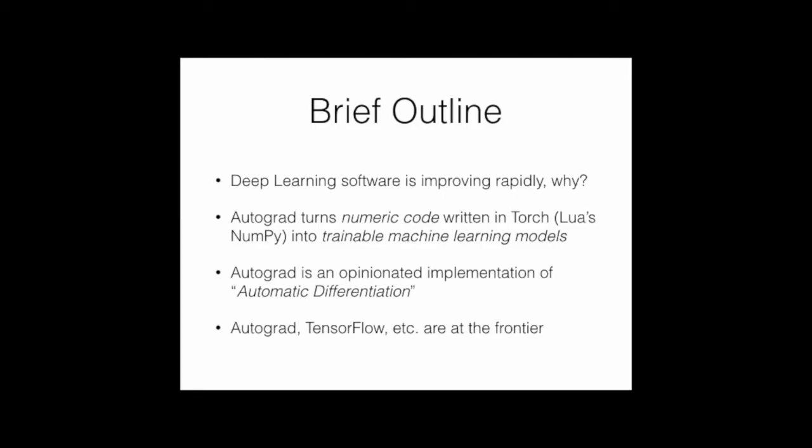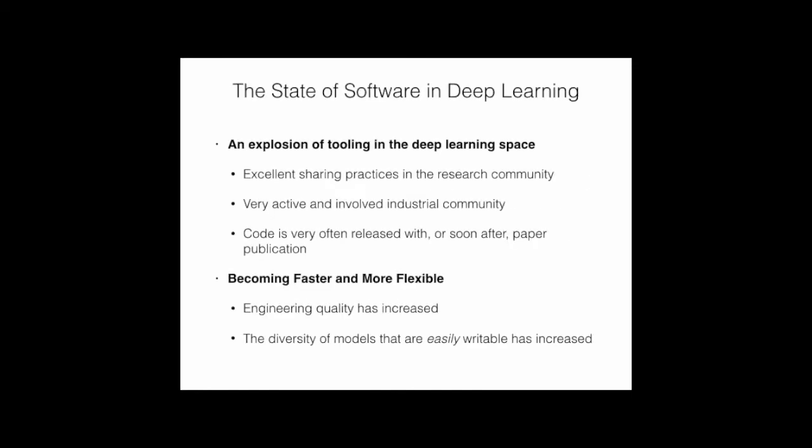I want to tell you about Autograd, a project that turns numeric code—just regular code that looks like NumPy—into trainable machine learning models. This uses something called automatic differentiation, a very opinionated implementation of it. It's the yin to probabilistic programming's yang, a very complementary technique. While probabilistic programming might not be appropriate for images of cats and incendiary politics on Twitter, neural networks are pretty good models for that. Autograd and deep learning packages like TensorFlow are at the frontier of building new libraries, but we're not done.